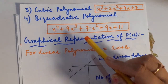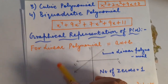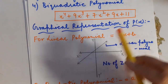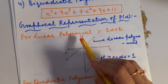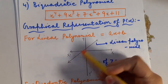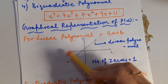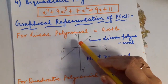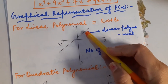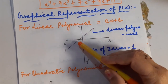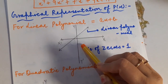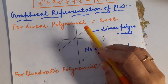Children, you can write as many polynomials as you want. Next is the graphical representation of the polynomial. Number 1: for linear polynomial, always remember that the graph of a linear polynomial will be a straight line. I have drawn a straight line on the Cartesian plane — this is the x-axis, this is the y-axis, and this is the graph of a linear polynomial. Wherever the graph of the linear polynomial intersects the x-axis, that many zeros will be possible.